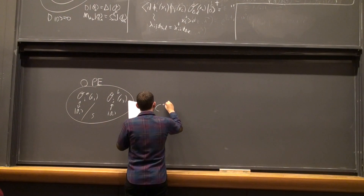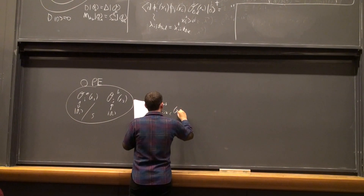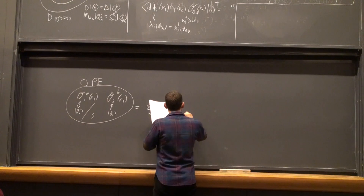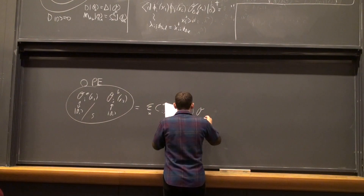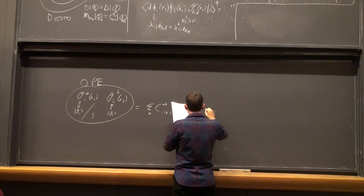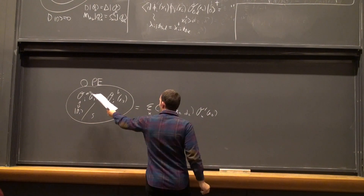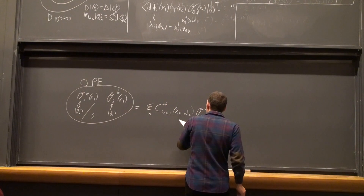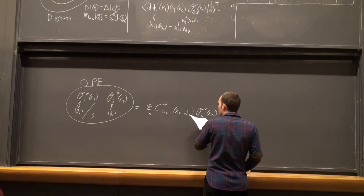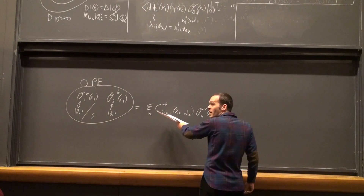So here we write — this is just some coefficient C_{ij}^k — which will be a function in general of each of the spacetime points, as well as derivatives. And then this is some possibly infinite set of other operators in the theory. So this is called the OPE. If the product of two operators is an infinite but convergent sum of all other operators allowed by symmetry which appear in the theory, where these coefficients are completely fixed by conformal symmetry — this is a very powerful statement.